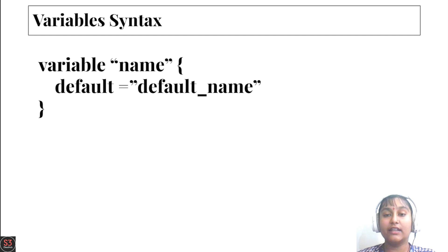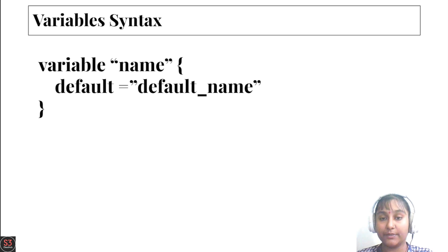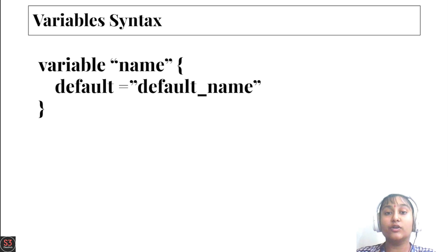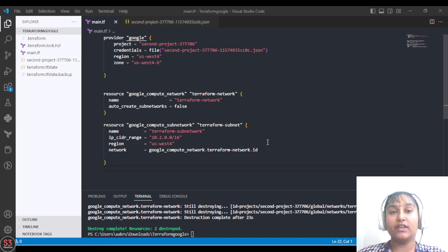Let's see the syntax for how variables are declared in a Terraform script. First we have the keyword 'variable', then we have the name of the variable, and then we have the default value, which is called the definition of the variable. Here will be the name first, and then we have the default value which we use multiple times.